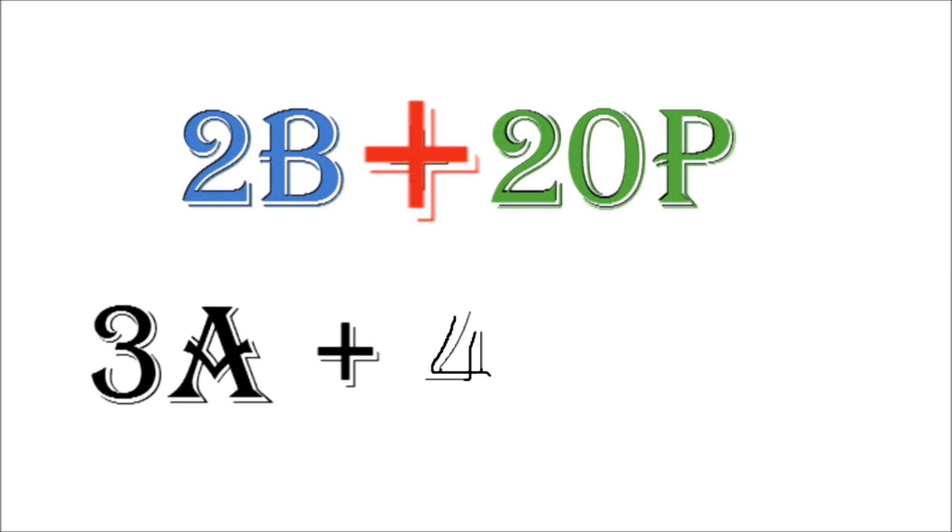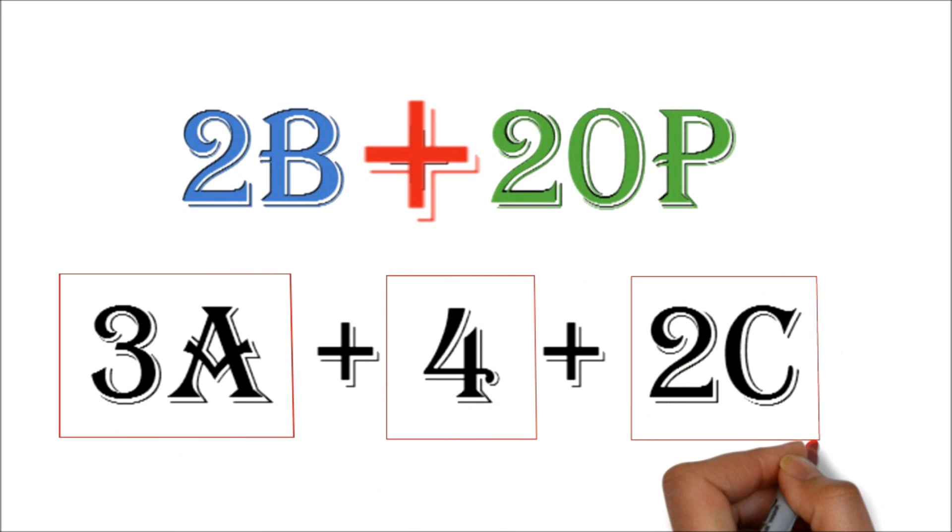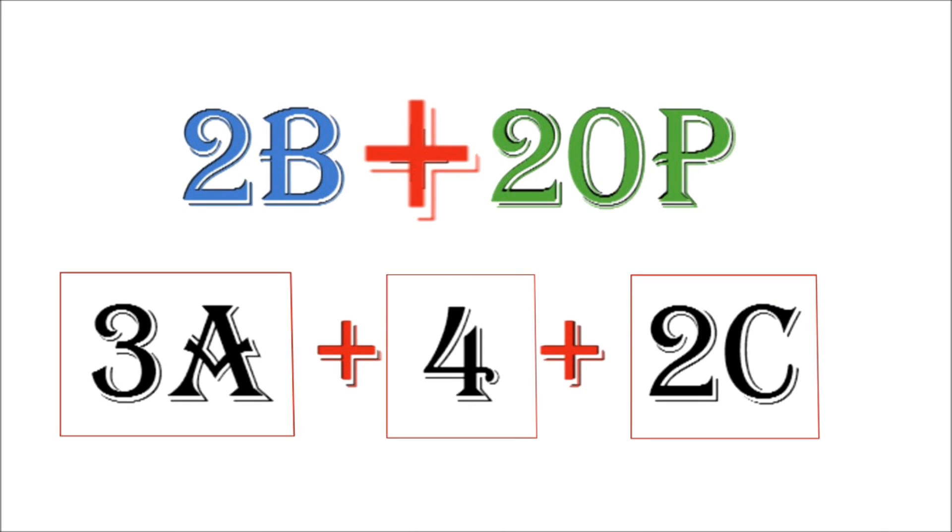Also, 3a plus 4 plus 2c has three terms, the 3a, the 4 and the 2c. Notice how they are separated by plus signs.